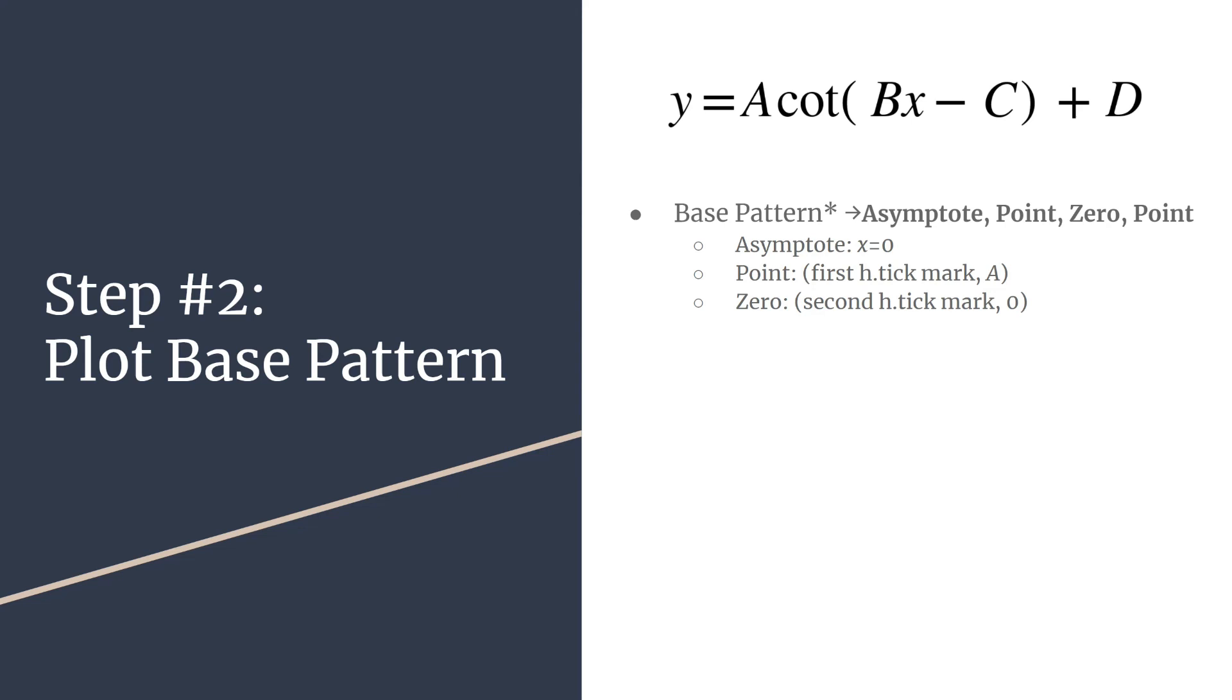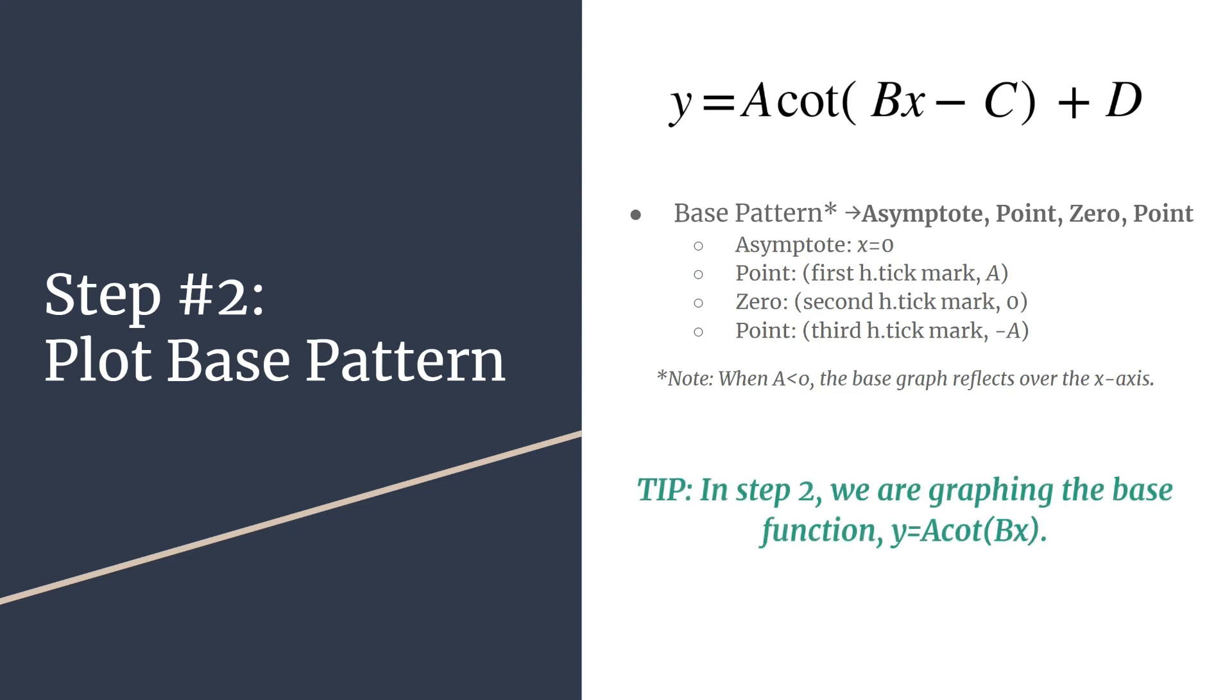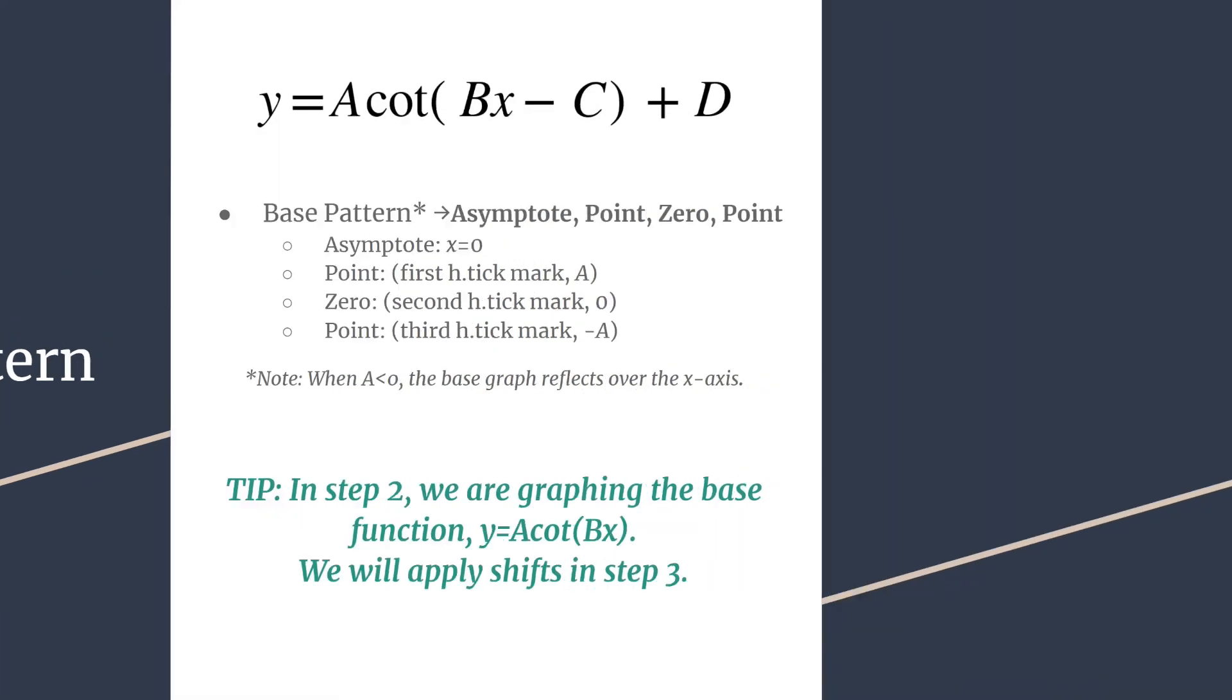The zero will happen at the second horizontal tick mark, and this is moving to the right. And your final point in the base pattern, your second curve setting point, will happen at your third horizontal tick mark. And you get its y-coordinate by taking the opposite value of A. So pretty simple, especially once you practice it a little bit. A quick note, this is when A is greater than zero. And then if you have A less than zero, you'll notice that you just have a reflection over the x-axis. So your original graph will look flipped vertically. So really in this step, we are just graphing that base function. So we're taking our graph without the shifts. It's basically like graphing y equals A cotangent Bx. And we're going to apply our shifts in step three.